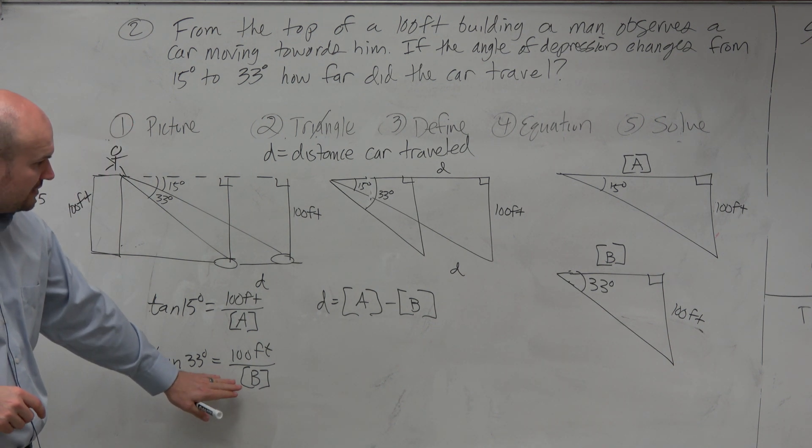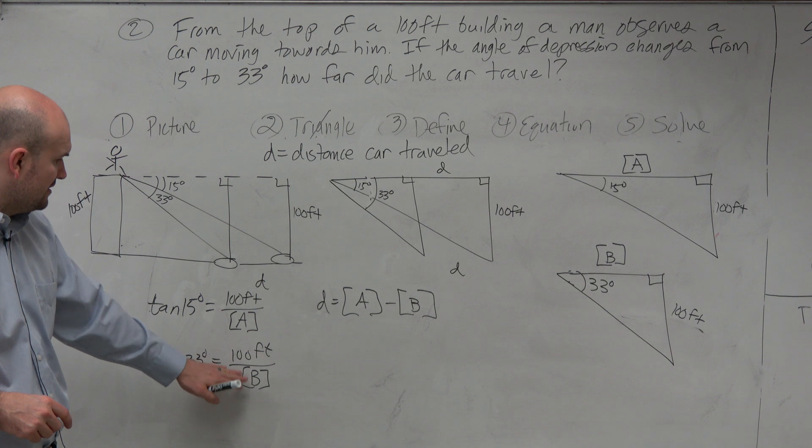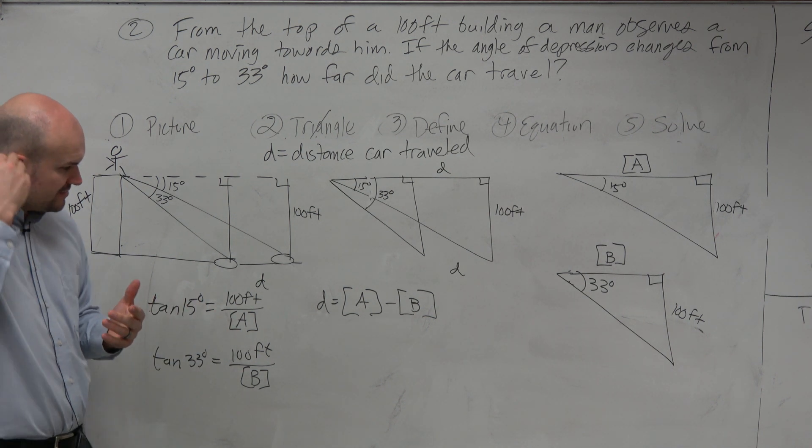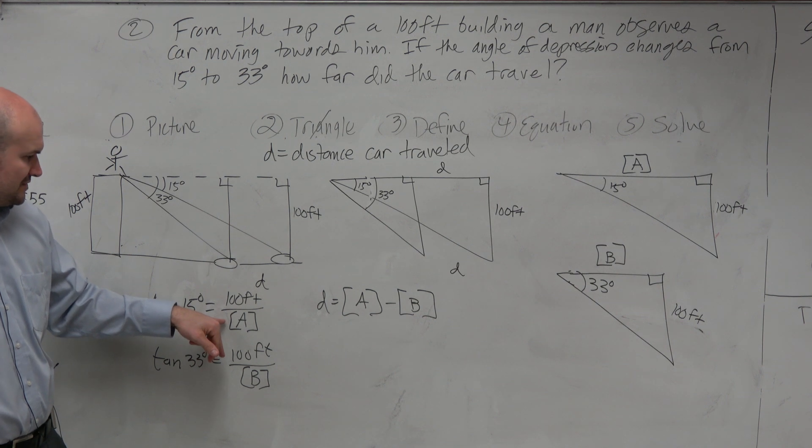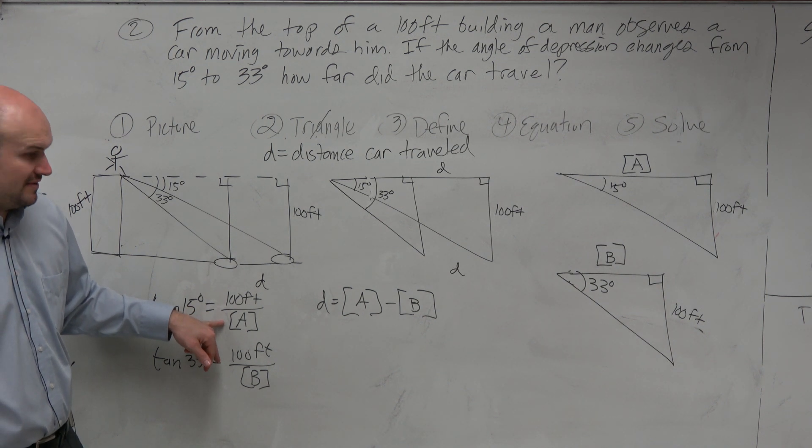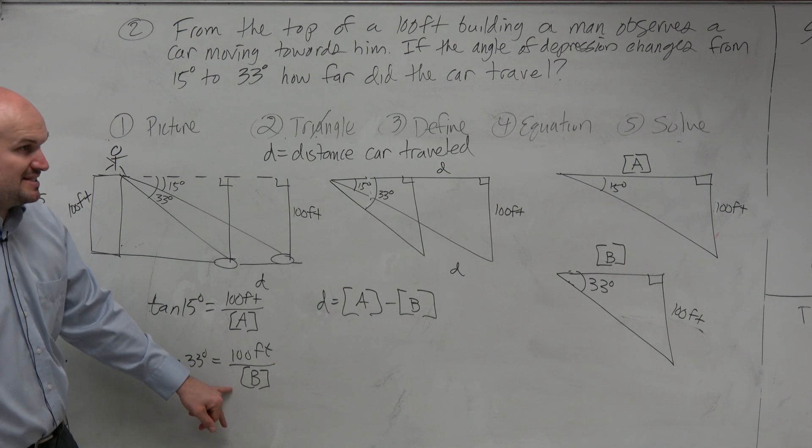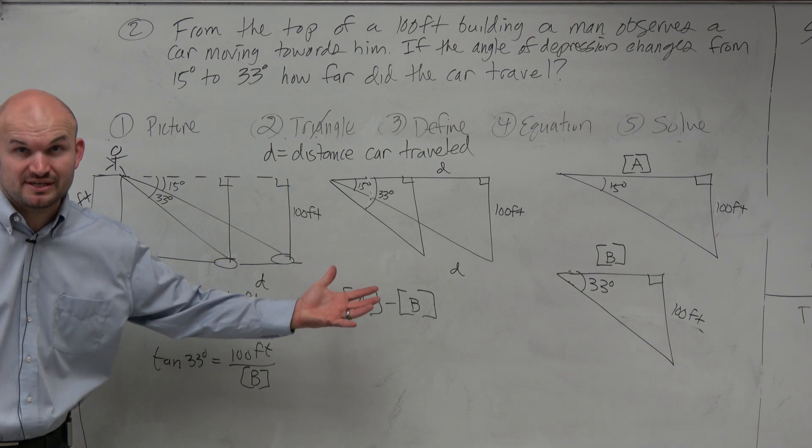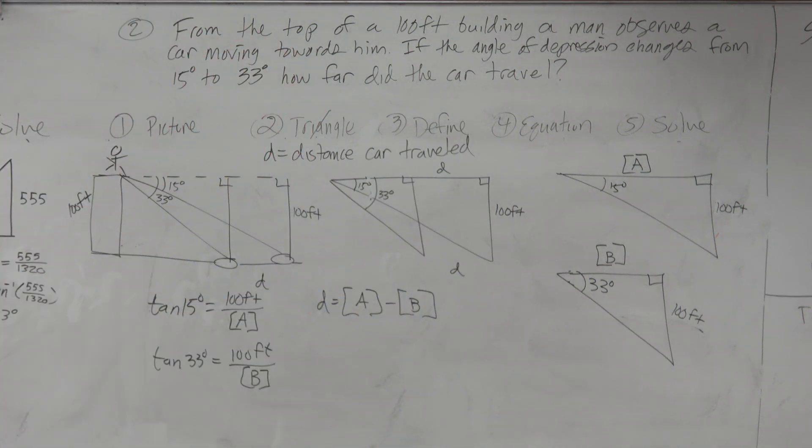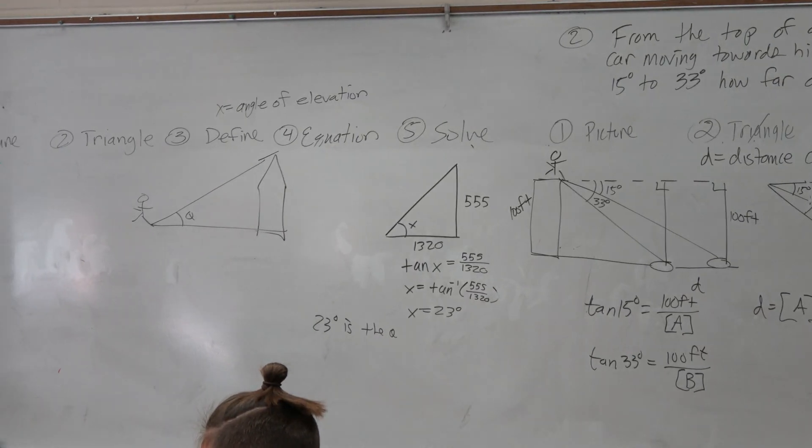All right, so now let's go ahead and figure out what these values are. Now, again, guys, if I really wanted to find a, what, like, are you guys OK with me doing a is really equal to 100 feet divided by tangent of 15 degrees? You guys OK with that? And then b is 100 feet divided by tangent of 33. We already did the work previously, right? All right, so let's go ahead and work on storing these in our calculator.